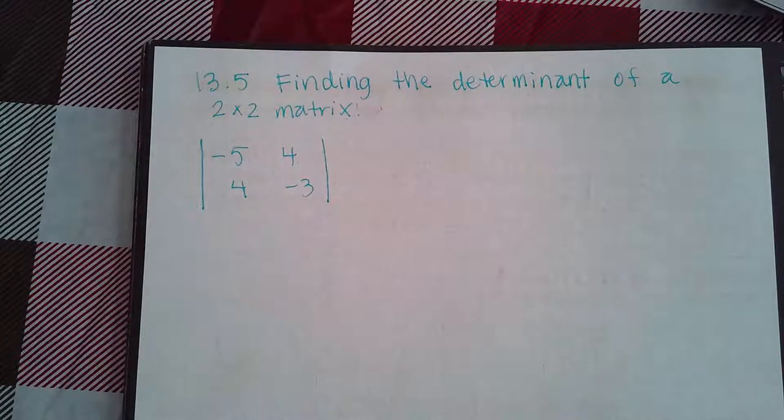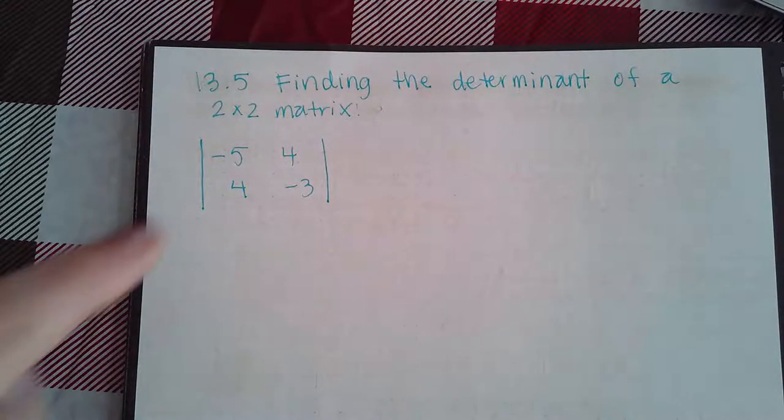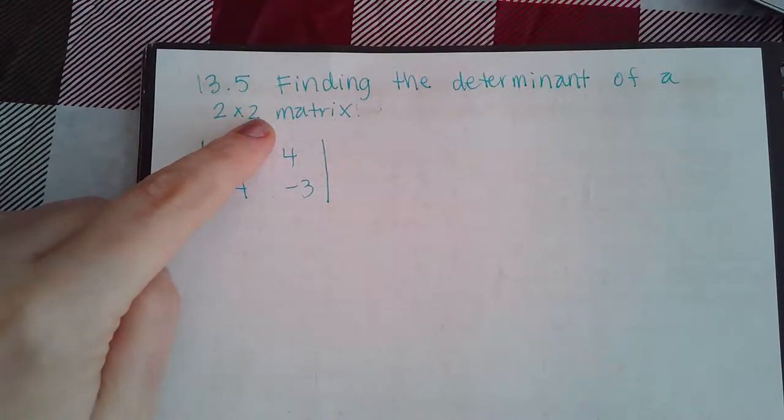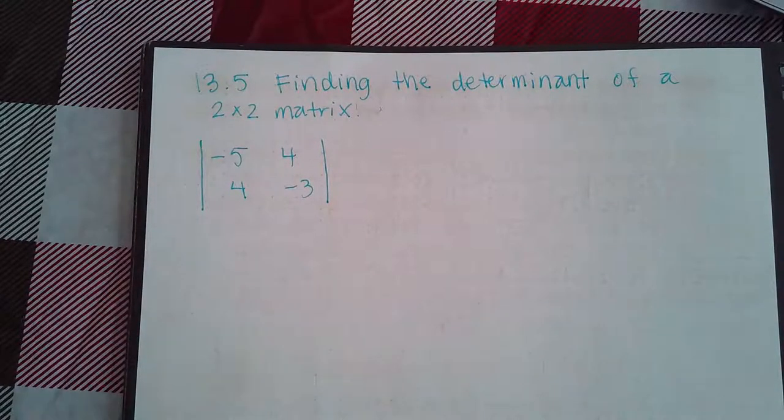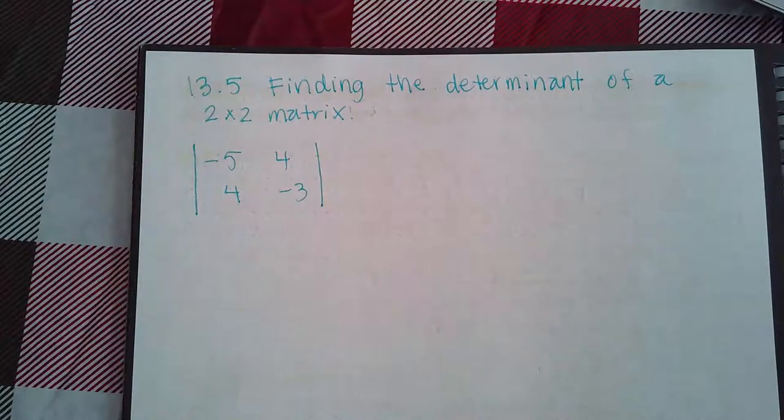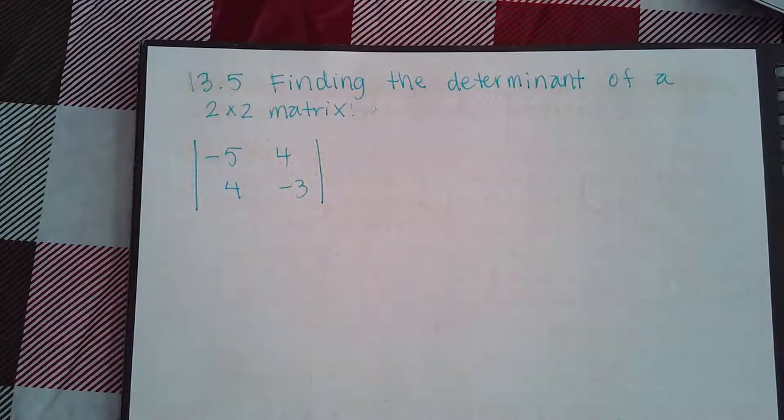Now, one thing that we need to know is that we can only take the determinant of square matrices. And a square matrix is a matrix that has the same number of rows as it does columns. So a 2 by 2 matrix is a square matrix, and so is a 3 by 3 matrix.